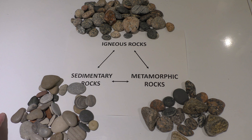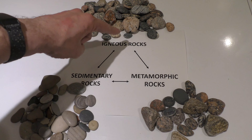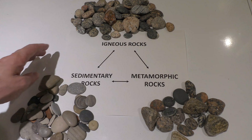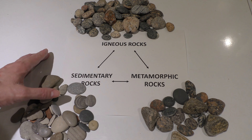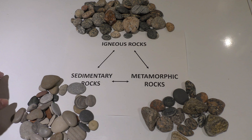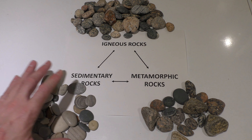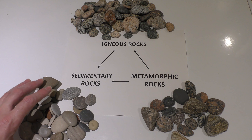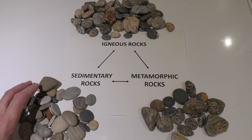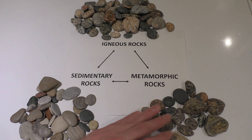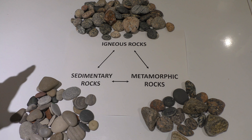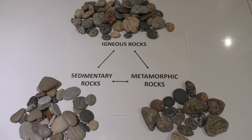You might have also noticed this little triangle showing the different rock types. There are three main types of rocks: igneous rocks, which formed from the crystallization or cooling of molten rock (magma); sedimentary rocks, which are made up of small pieces of other rocks that have been broken down; and metamorphic rocks, which began as either igneous or sedimentary rocks and changed after being heated up and compressed by being buried deep in the earth.